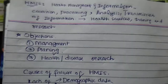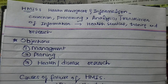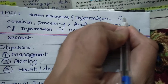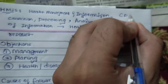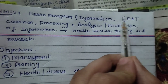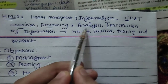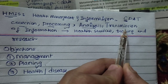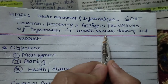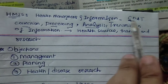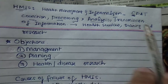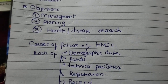Assalamu alaykum everyone. In this video we are going to do Health Management Information System. In the definition, we have CPAT — which stands for Collection, Processing, Analysis, and Transmission of information for conducting health services, training, and research. Now its objectives are as follows.